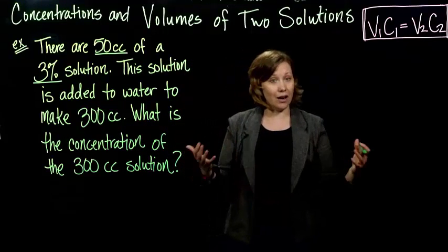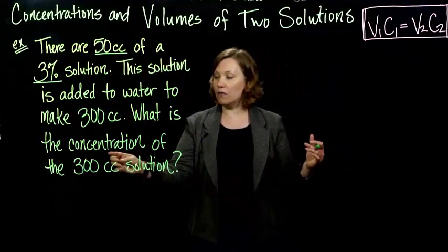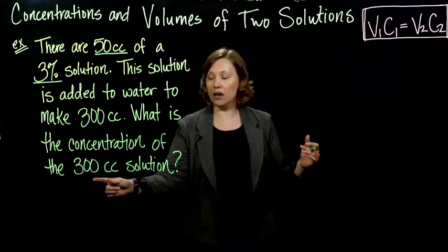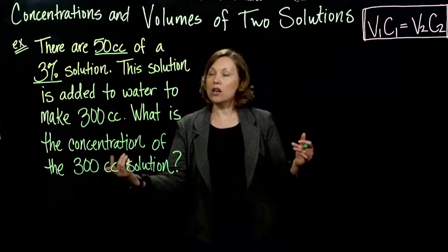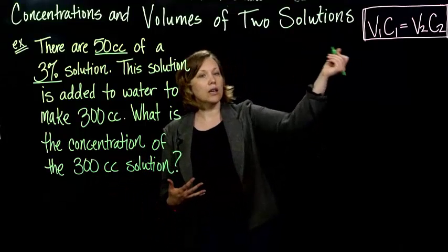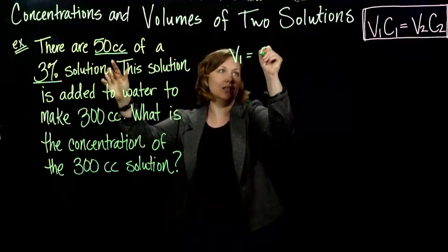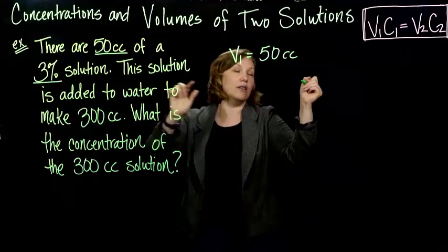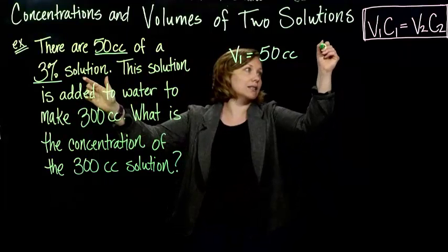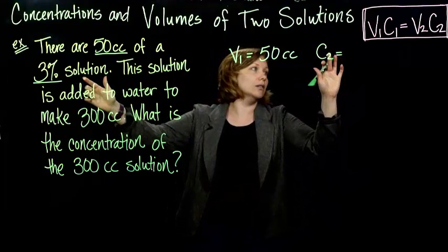So if we add that water, that's going to be our dilution, and we're looking for the new concentration of the 300 cc. So you could go through, if it helps you out, you can go through and label what your different things are. So the first volume they give me is 50 cc's, and the percent that goes with that 50 cc's, the concentration, that should be a 1, should be 3%.